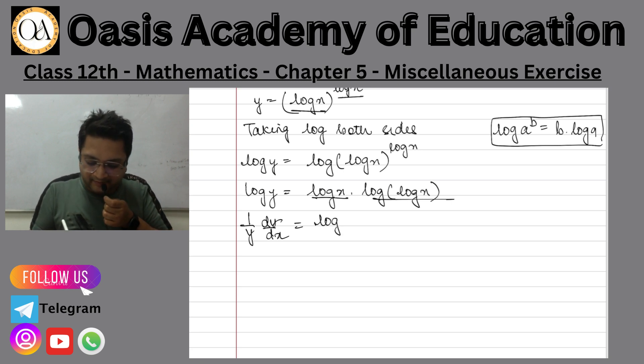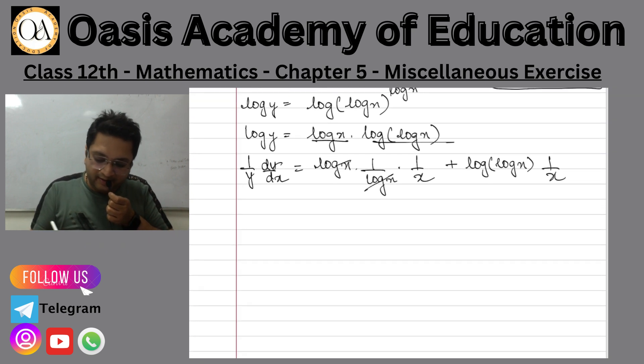I am keeping log x constant. So here will be 1 upon log x into log x derivative, that is 1 upon x. Now keeping log log x constant, and log x derivative is 1 upon x. If you will see log x, log x is equal to log x.